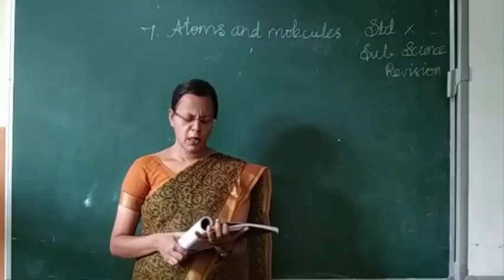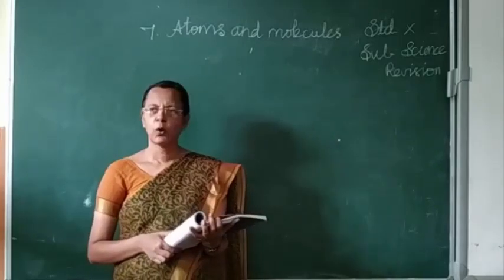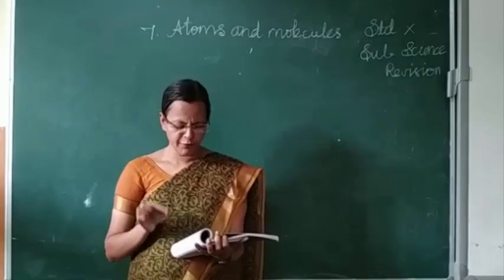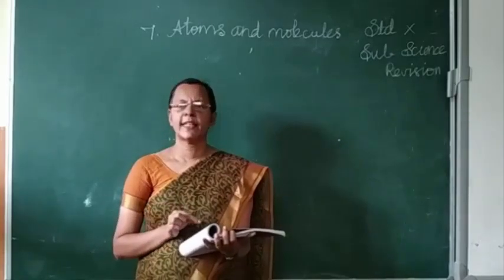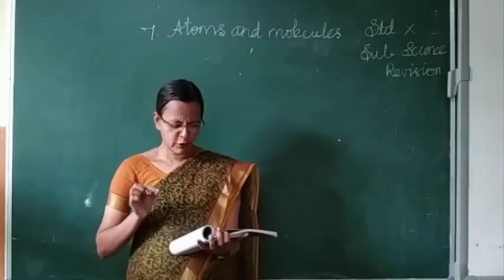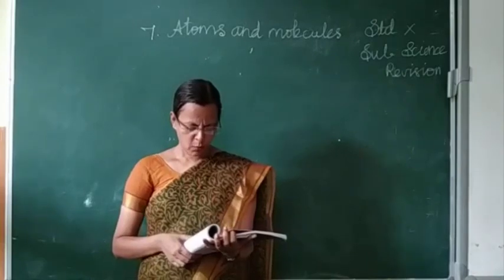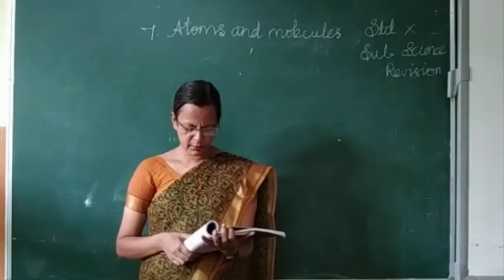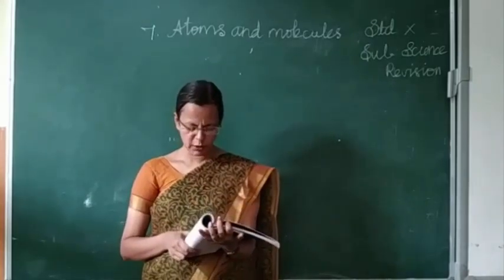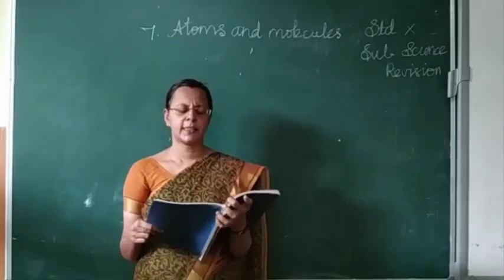Fourth question: Mass of 1 mole of nitrogen atom is 28 gram. Fifth question: Which of the following represents 1 AMU? The answer is 1/12th of the mass of a carbon-12 atom.